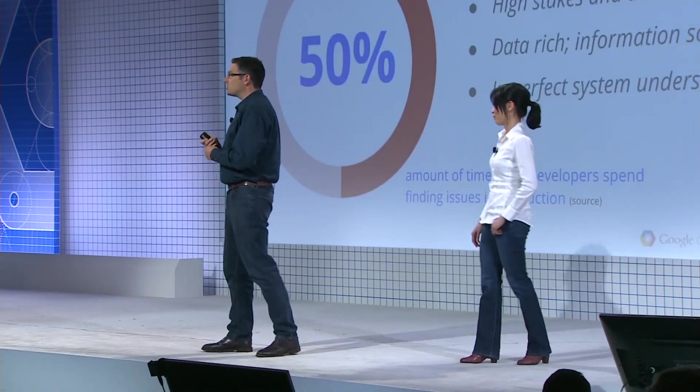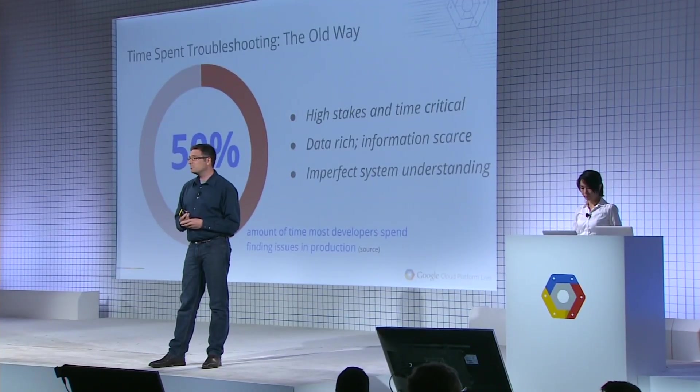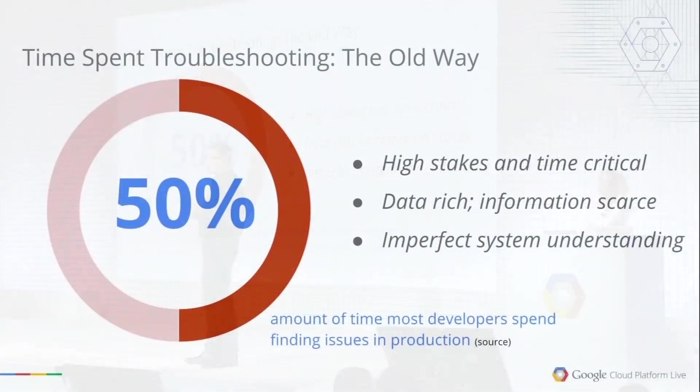In a recent survey of developers, we found that most developers spend over 50% of their time finding and fixing issues in production. Why do we spend so much time? It's because this is a really high-stakes situation. When there's an issue in production, nothing else matters — you have to drop everything and work on just that. And when you're doing that, it's a very data-rich environment. There's logs and monitoring data, Git diffs to look at. But it's information scarce — it's hard to determine what the root cause is, what data you should actually be paying attention to.